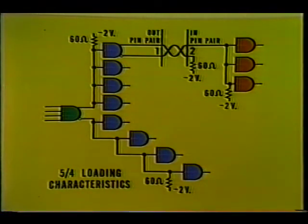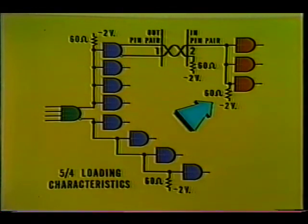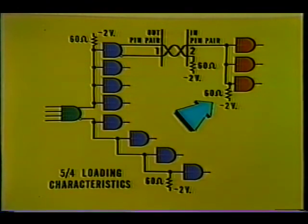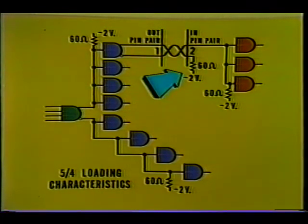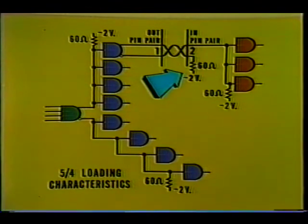Each gate output, both normal and inverted, can only drive three loads if those loads are located on another module. In that case, the pull-up resistor will be located on the destination module, next to the load that is located furthest from the input pin pair. Even though the inverted output is not used in this case, a 60-ohm pull-up resistor is still used and is located on the destination module.